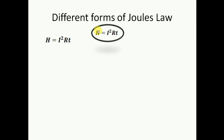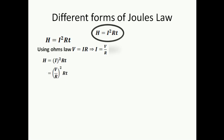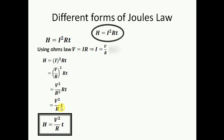Now I'll use Ohm's law and substitute I is equal to V by R into this formula. If you put I equal to V by R, you will get V squared by R squared times RT. If you cancel one R from the R squared, you will get V squared by R times T. So this is the first form of Joule's law of heating.